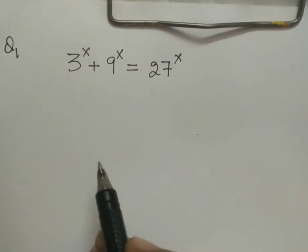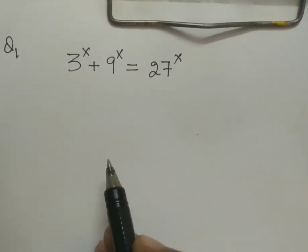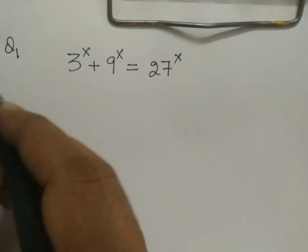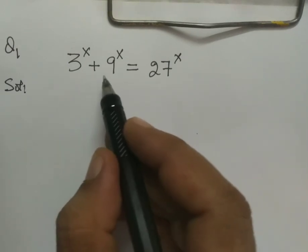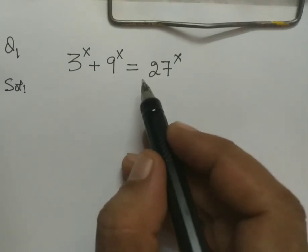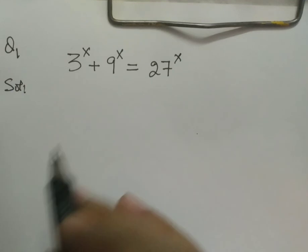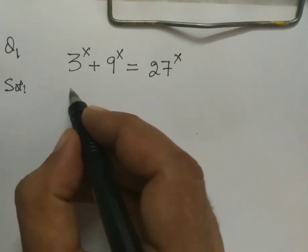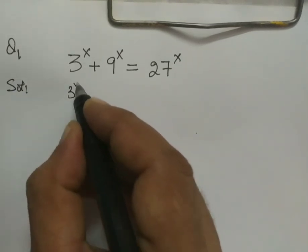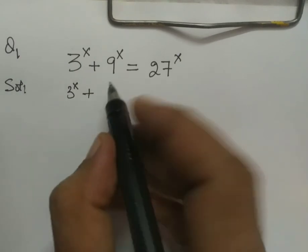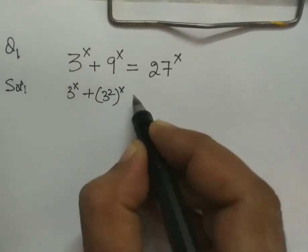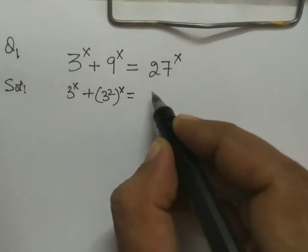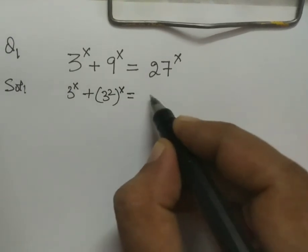Hello guys, today we have a Ukrainian math olympiad problem. So let's start. The equation is 3^x + 9^x = 27^x. We can rewrite this as 3^x + (3^2)^x = 27^x.